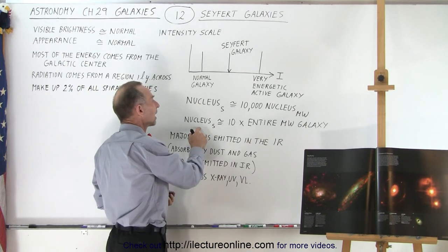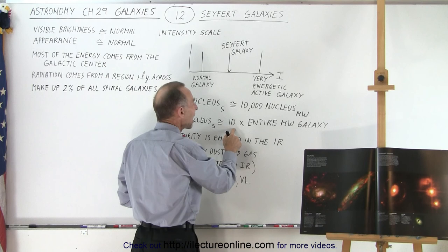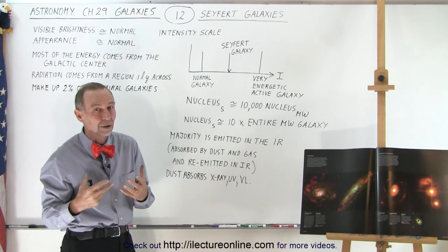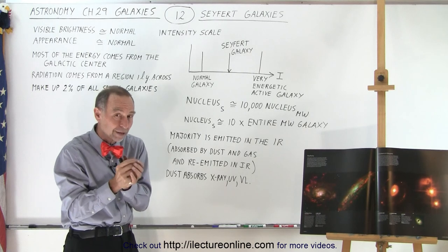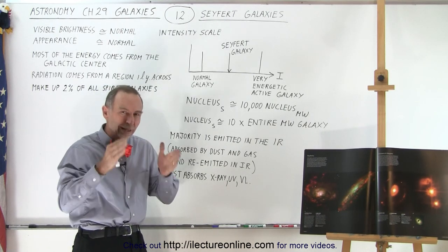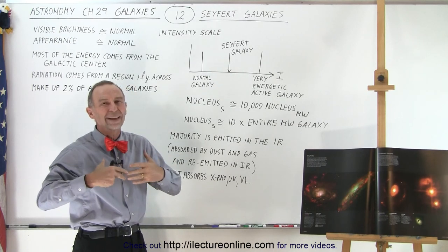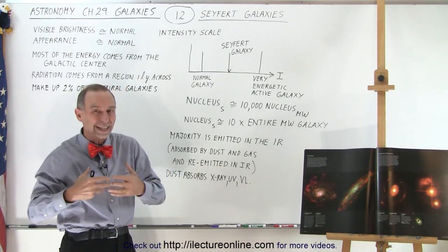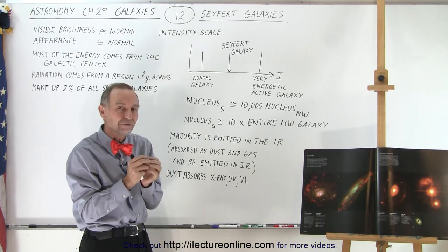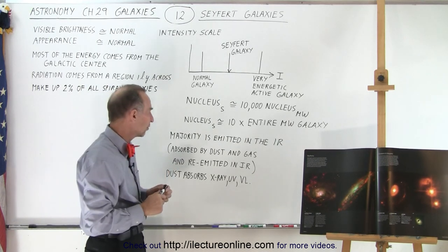The nucleus of the Seyfert galaxy puts out about 10 times as much energy as the entire Milky Way galaxy combined. So we're not talking about a small amount of energy coming from that center. That center of that galaxy, about one light year across, puts out as much as 10 Milky Way galaxies in their entirety. So it's a huge amount of energy that we get from that small little region at the very center.